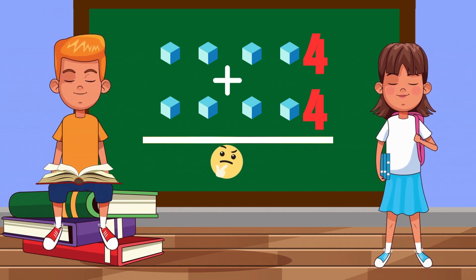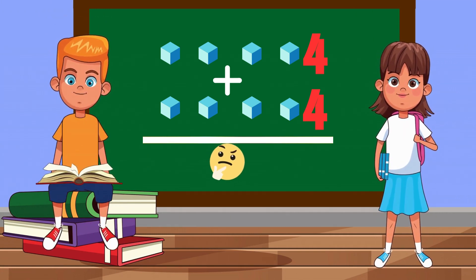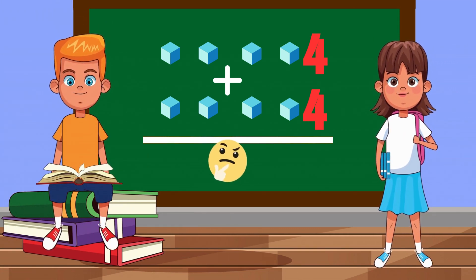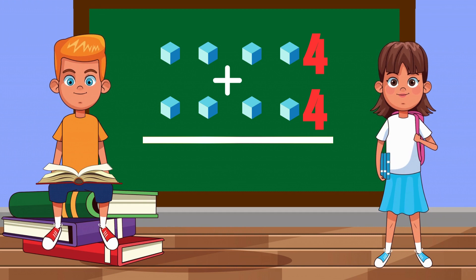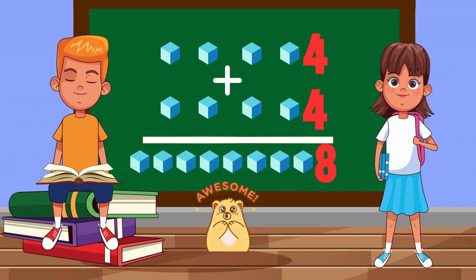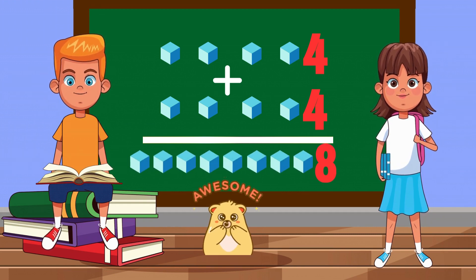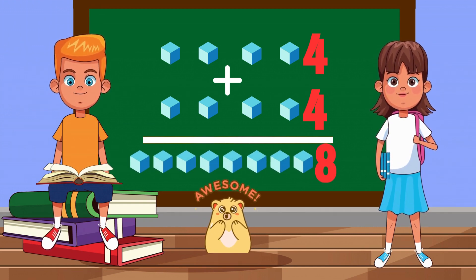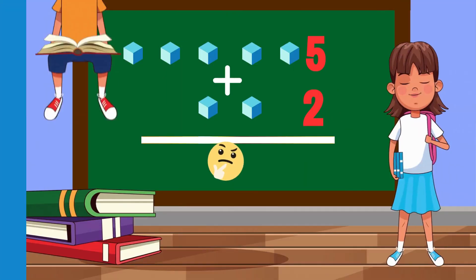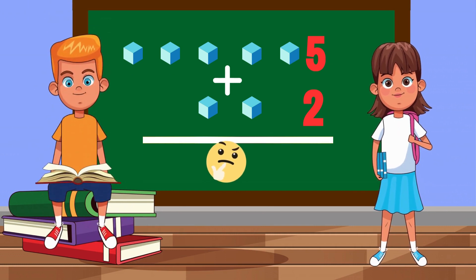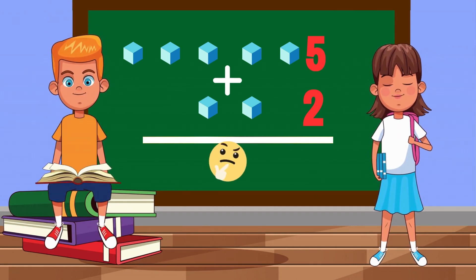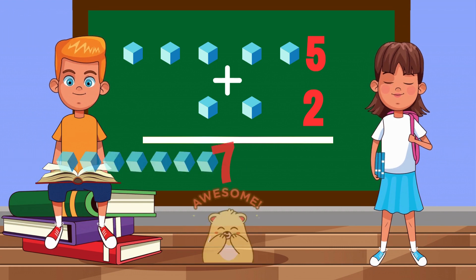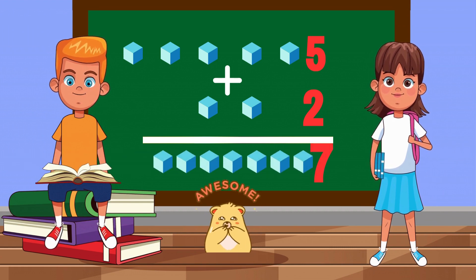Four cubes plus four cubes equals... Eight cubes! Five cubes plus two cubes equals... Seven cubes!